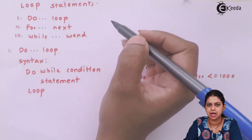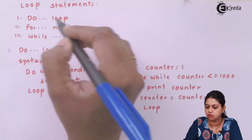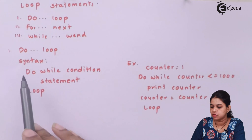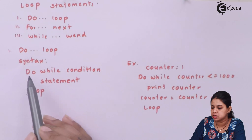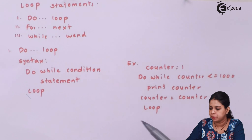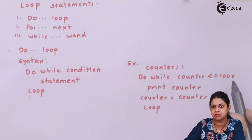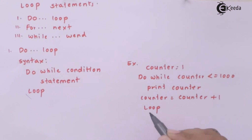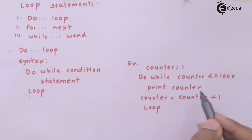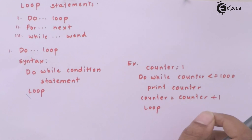There are three types of loops in Visual Basic: Do Loop, For-Next, and While-Wend. The Do Loop has two types. Do-While syntax is: Do While condition, statement, Loop. For example, counter starts at one; while counter is less than or equal to 1000, print counter and increment counter by one.